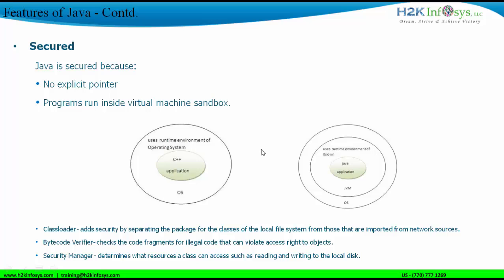At a deeper level, Java security involves class loaders, bytecode verifiers, and security managers. Class loaders add security by separating the package for local file system classes from those imported from network resources. Bytecode verifiers check fragments of code for illegal coding and access right violations. Security managers determine which resources in a class file can be accessed. These are the micro-level concepts that make Java a secure language.